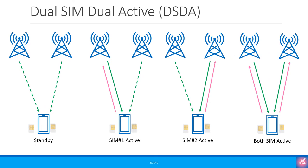In dual SIM dual active, or DSDA, the device has two transceivers, so both SIM cards are active at the same time and each transceiver can handle a call independently of the other. It is even possible to conference both calls, or just put one on hold and answer the other. While in practice we don't see devices with more than two SIMs each being active simultaneously, in theory you can have multiple SIM multi-active, or MSMA.